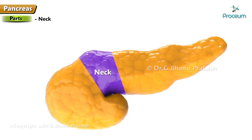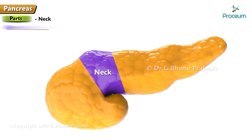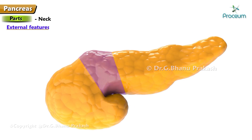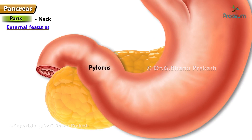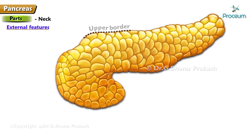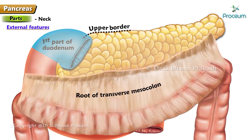Neck of the pancreas: it is a slightly constricted part of the gland between the head and body, 2.5 cm long, directed forwards, upwards, and to the left. It has two surfaces — anterior and posterior — and two borders — upper and lower. The anterior surface is related to the pylorus; the posterior surface is related to the termination of the superior mesenteric vein and the beginning of the portal vein. The upper border is related to the first part of the duodenum and the lower border to the root of the transverse mesocolon.